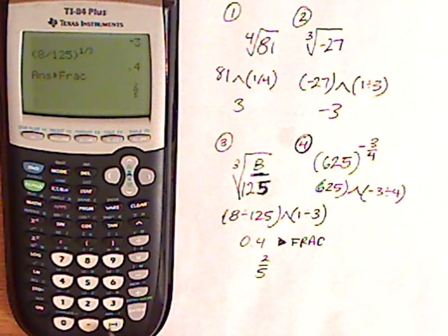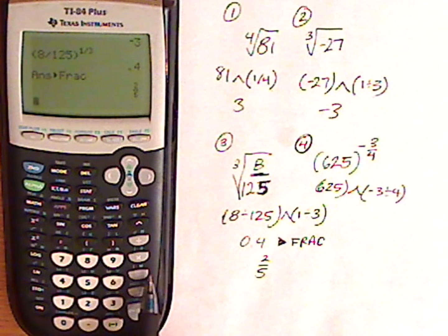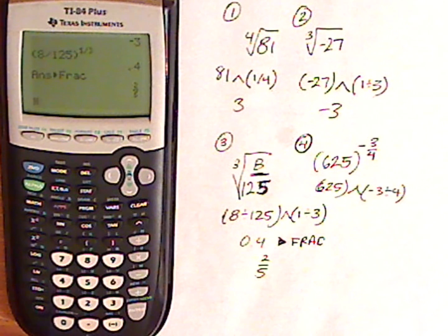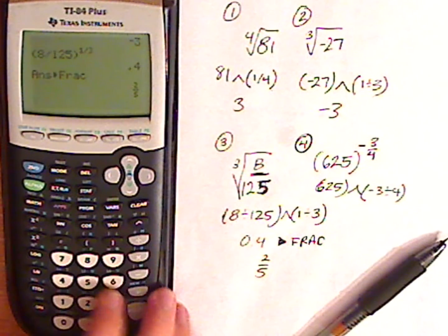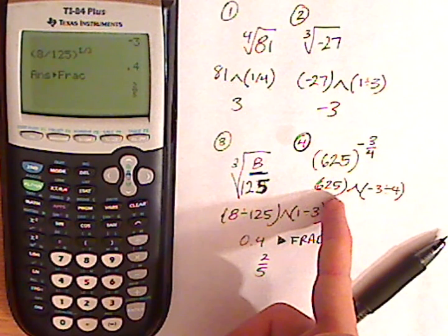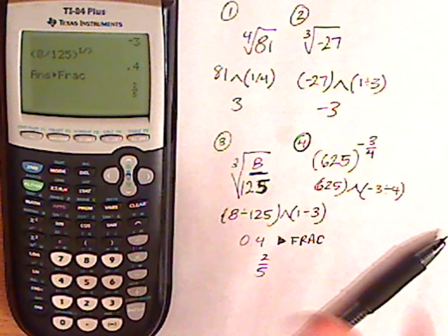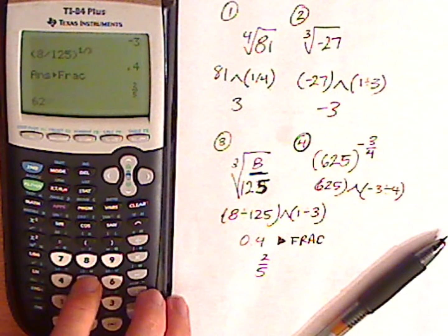Again, be careful of the negative sign. You want to push this right here as opposed to this. Do not push this for negative signs. Push this for negative signs. So I don't really need parentheses here because there's no negative involved. So I'm just going to type in 625.